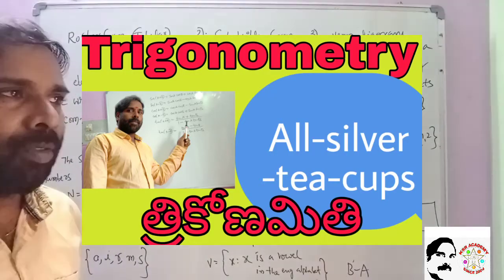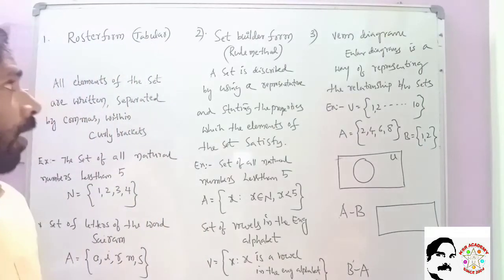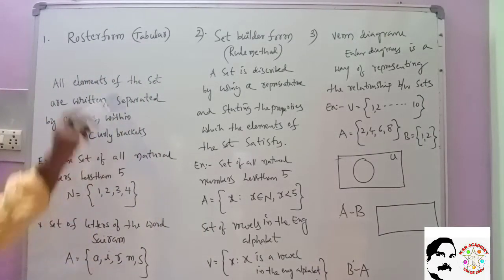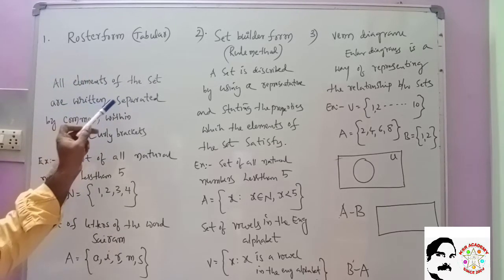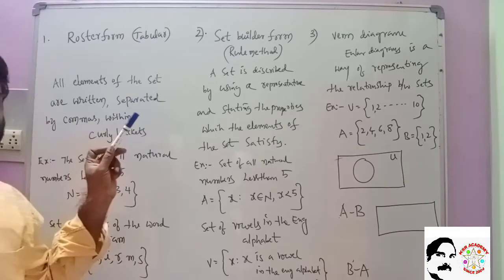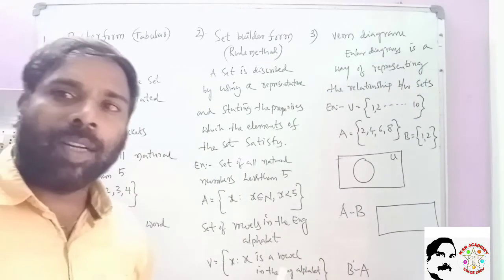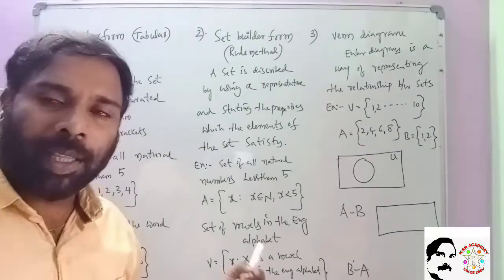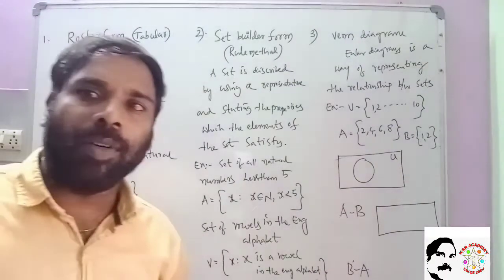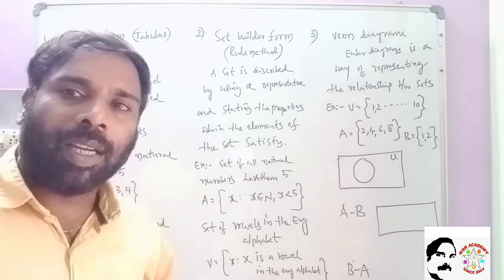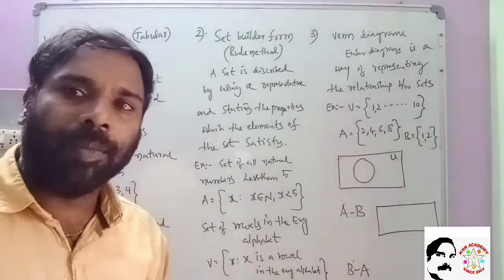In Roaster Form, all elements of the set are written separated by commas within curly brackets. So, within curly brackets, elements are separated by commas. Repeated letters are not written again — only different letters are written, separated by commas.